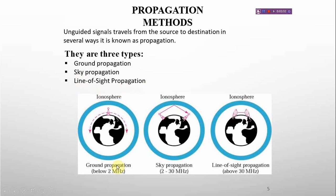Ground propagation operates below 2 MHz. Sky propagation operates from 2 to 30 MHz. And line-of-sight propagation operates above 30 MHz.